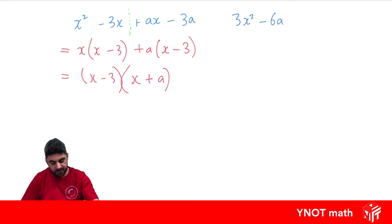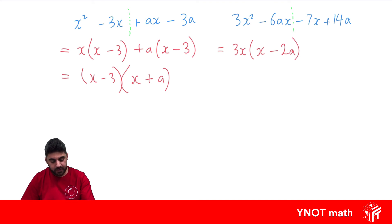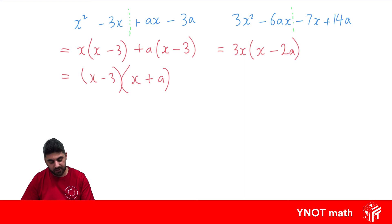One more: 3x squared minus 6ax minus 7x plus 14a. Let's split them into pairs and look for common factors. In the first pair we can pull out 3x, which leaves x behind in the first term, and pulling 3 from 6 and x out leaves 2a — so we get x minus 2a. In the second pair we want to pull out minus 7, because that leaves behind a positive x. Pulling minus 7 out of minus 7x leaves x.